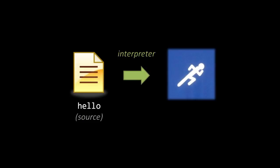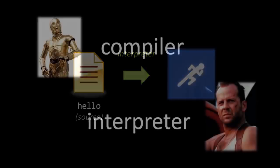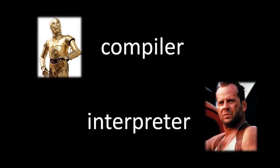An alternative to compilation is a scheme called interpretation, performed by programs called interpreters. Whereas a compiler reads your source code and translates it into another form of code — usually machine code — an interpreter reads your source code and translates it into action. An interpreter reads the source code and, as it reads the source code, it does what the source code says to do. To run a program with an interpreter, we don't produce any executable file, we just run the code through an interpreter. The interpreter's actions as it reads the code is the running of our code.